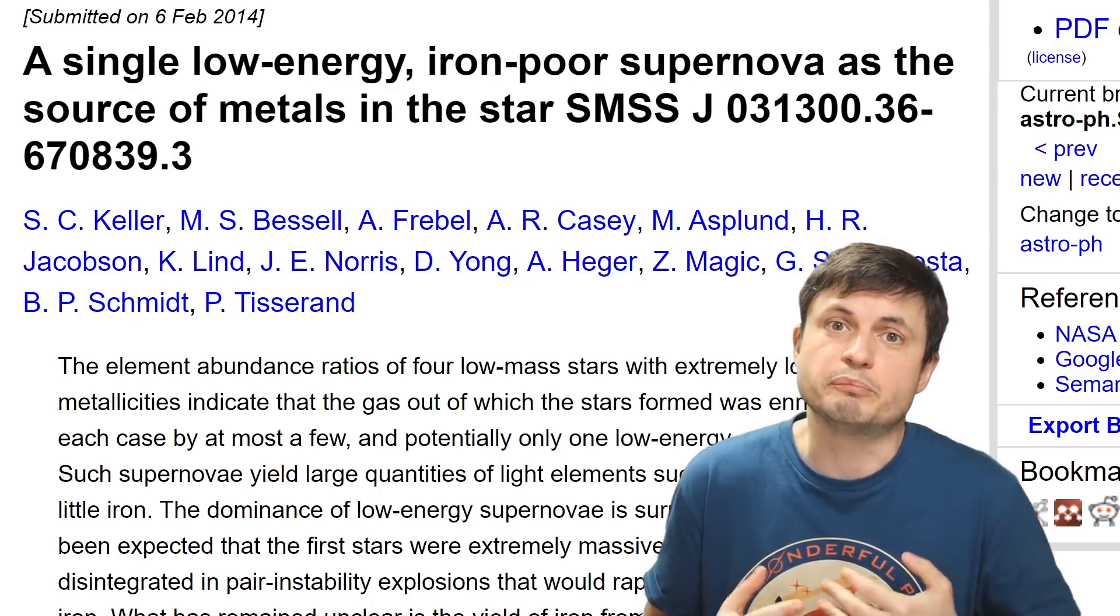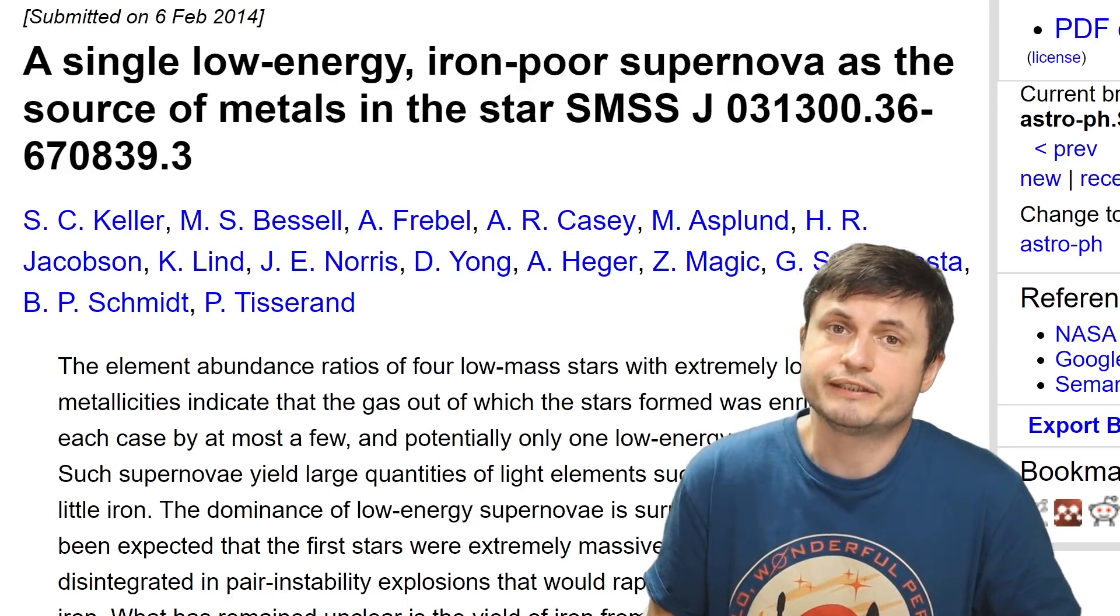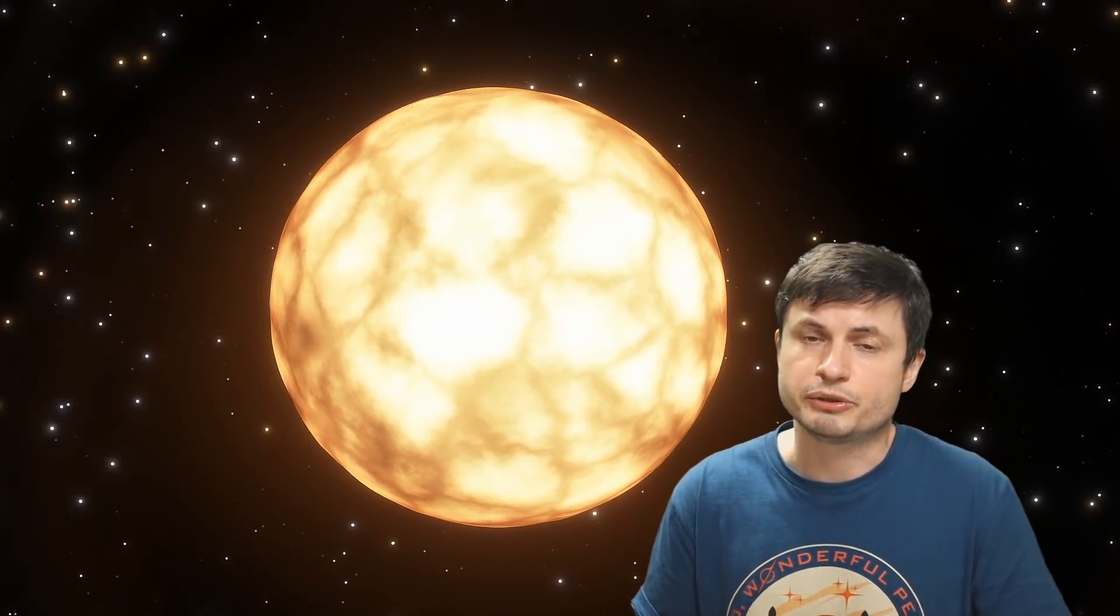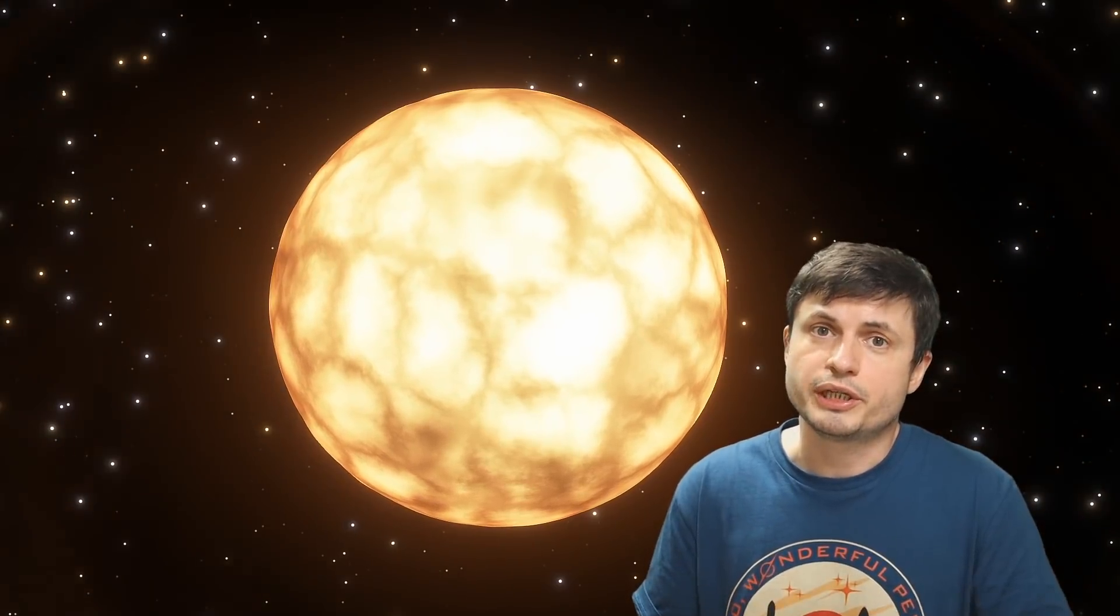Now this is where the mystery sort of begins. Today the scientists have been trying to discover these mysterious population 3 stars by trying to find these UMPs, these ultra-metal-poor stars. The majority, if not all of these UMPs, were probably produced by a single supernova of the oldest or the most ancient stars in the universe. And today the scientists simply refer to these as population 3 or pop 3 stars.